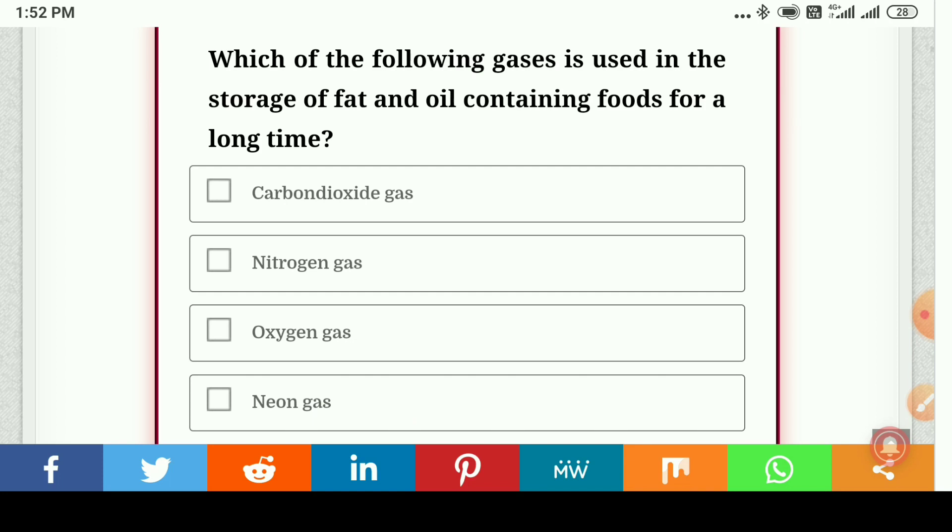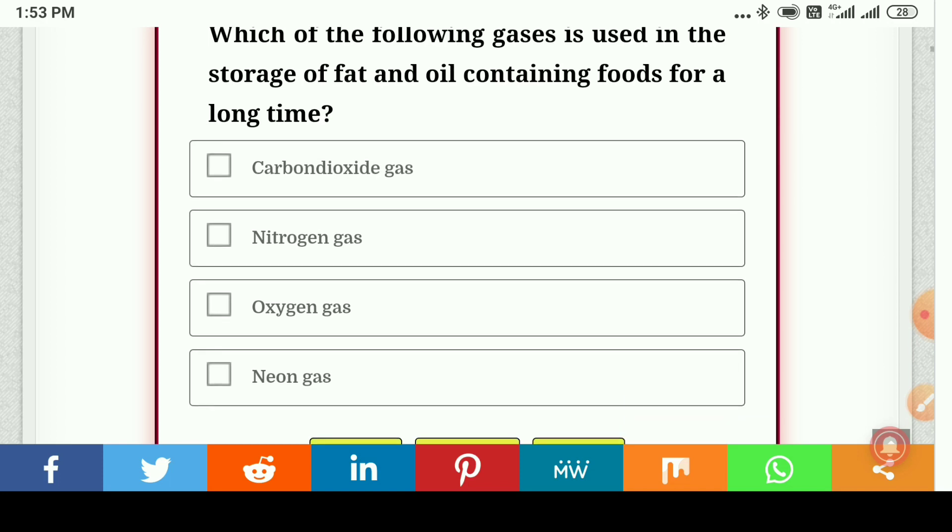Which of the following gases is used in the storage of fat and oil containing foods for long time: carbon dioxide, nitrogen, oxygen, or neon? The answer is nitrogen gas, yes correct.